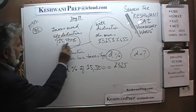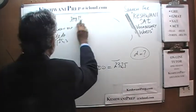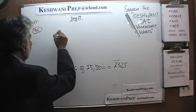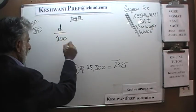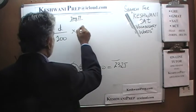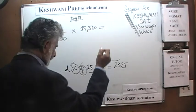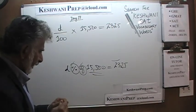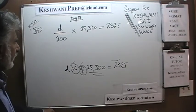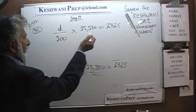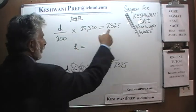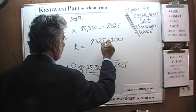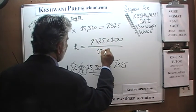Let's solve this equation. D percent means D over 100; 'of' means times. So: (D/100) × 15,500 = 2,325. Solving for D: bring the 100 over and the 15,500 down, so D equals 2,325 times 100 over 15,500.